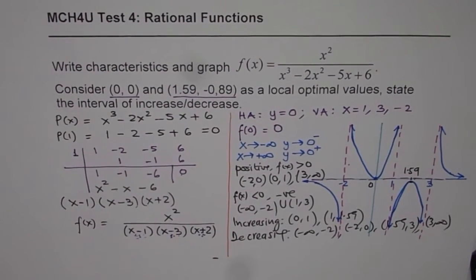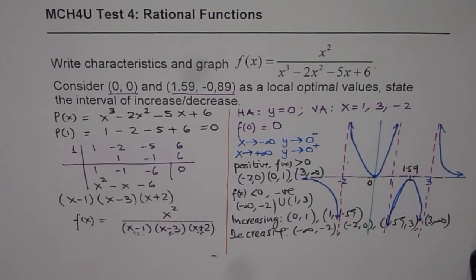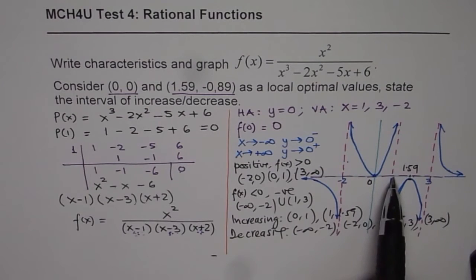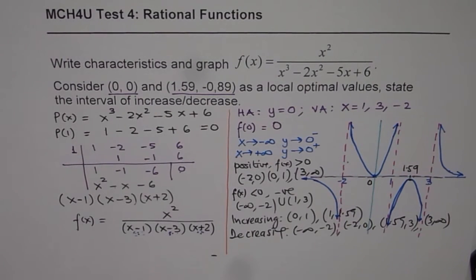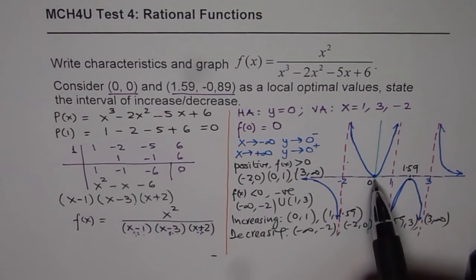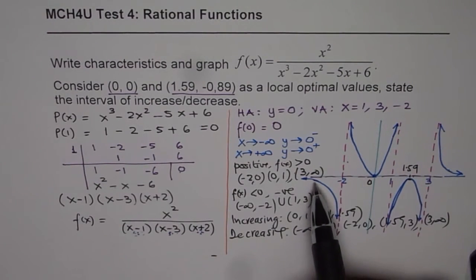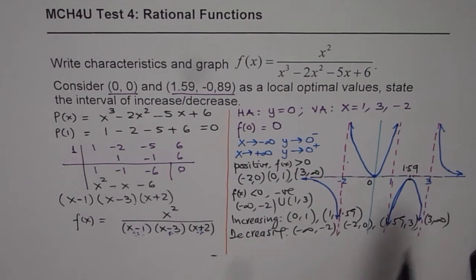These are the characteristics of the given function. I'd encourage you to watch this video once again. The critical things to identify are the horizontal and vertical asymptotes, the given optimal points, and testing the behavior of the function near its asymptotes — all of which help produce a clear and accurate graph for a rational function. I hope that helps. Thank you.